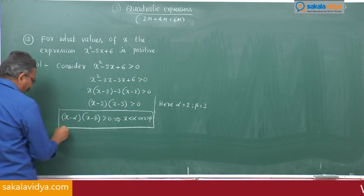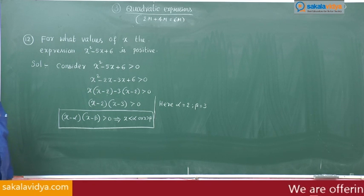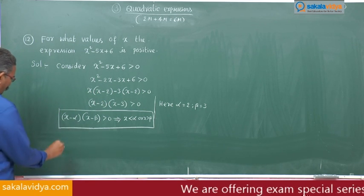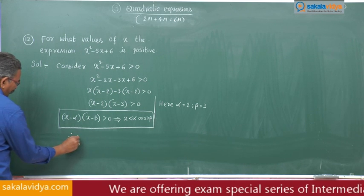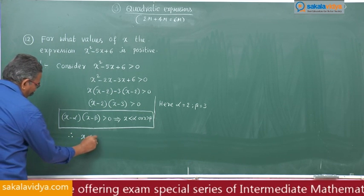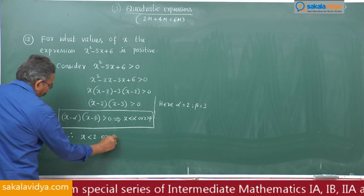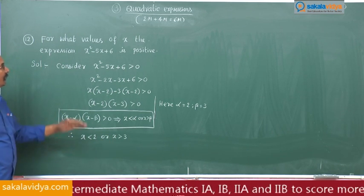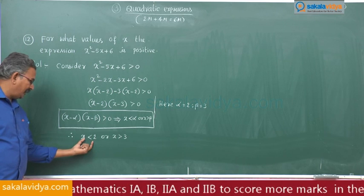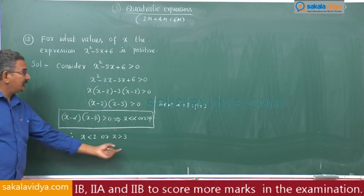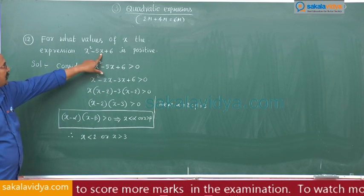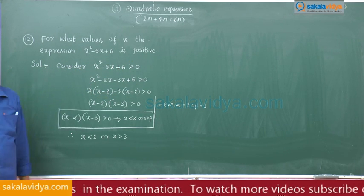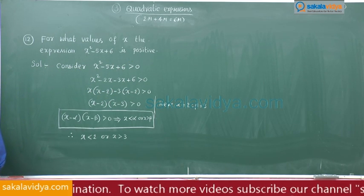Comparing with our expression, the solution is x less than 2 or x greater than 3. That means for x less than 2 or x greater than 3, x squared minus 5x plus 6 is positive. Now we move to the next problem.